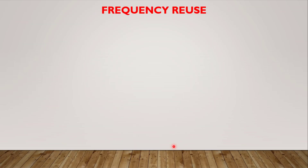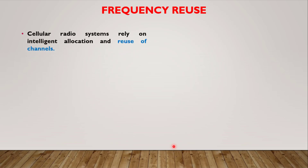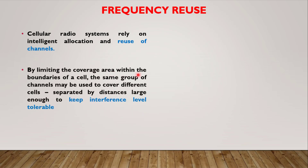Now, the frequency reuse concept. Cellular radio systems rely on intelligent allocation and reuse of channels. If we are using some X frequency channels in a particular cell A, then these X frequency channels can be reused again in some other cell B by providing sufficient gap between the two cells — that is what we call the frequency reuse concept. By limiting the coverage area within the boundaries of a cell, the same group of channels may be used to cover different cells separated by a distance large enough to keep the interference level tolerable.